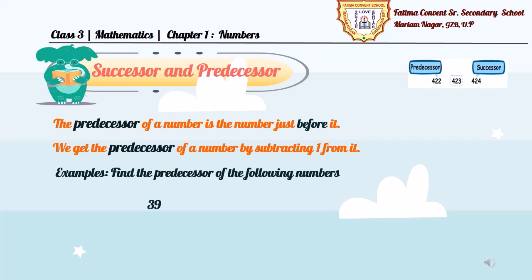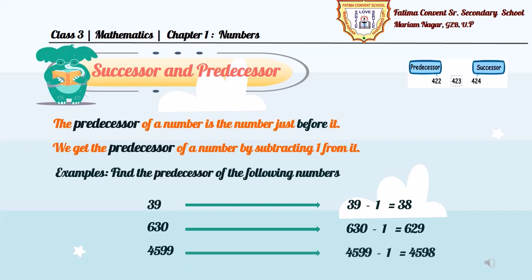Find the predecessor of the following numbers. First, 39. So, to get predecessor of 39, we need to subtract 1 from 39. So, 39 minus 1 is equal to 38. So, predecessor of 39 is 38. Similarly, 630, 630 minus 1 is equal to 629. So, the predecessor of 630 is 629. And this 4-digit number 4599, the predecessor will be 4598. It is obtained by subtracting 1 from the given number 4599.